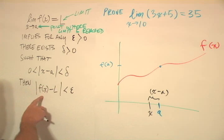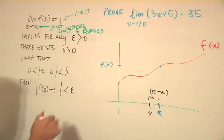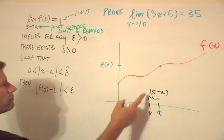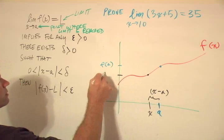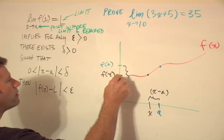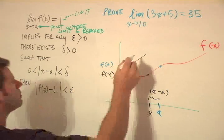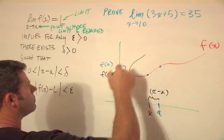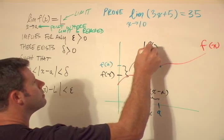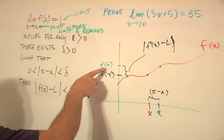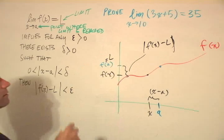And we're saying that if we force x minus a to be less than some value delta, then f of x minus l is less than some value epsilon. So if this is a and that's f of a, then when this is x, this becomes f of x. And then this distance here is equal to f of x minus l, the absolute value in any case, because l is the same as f of a.